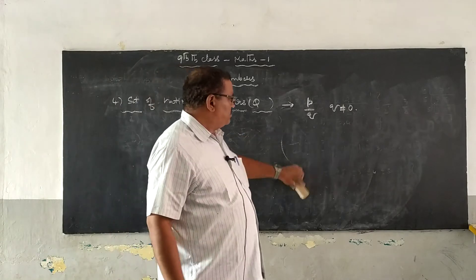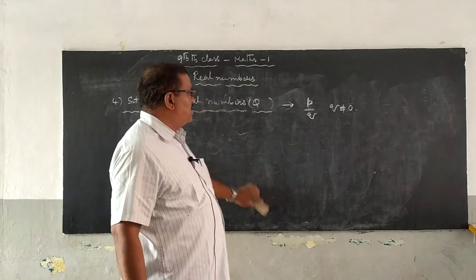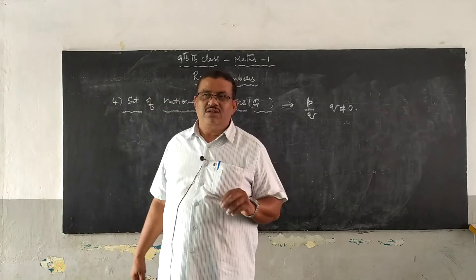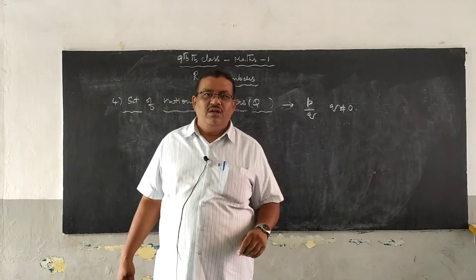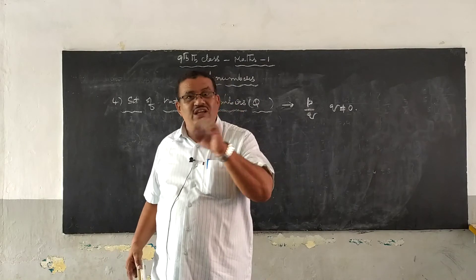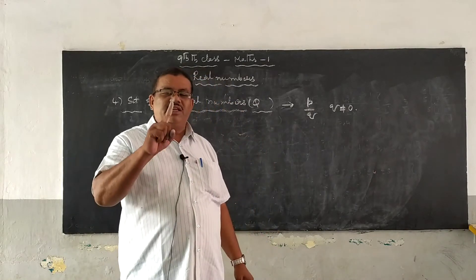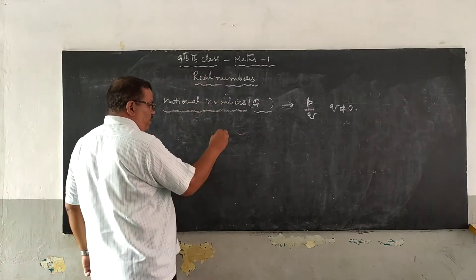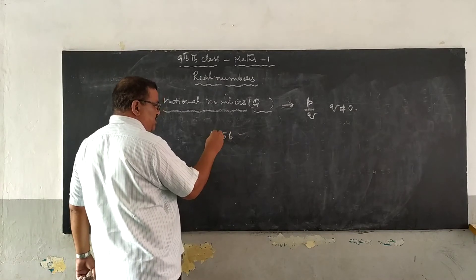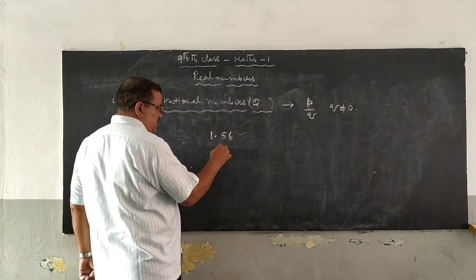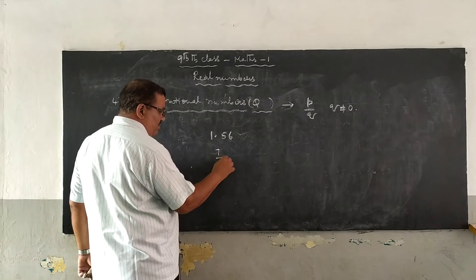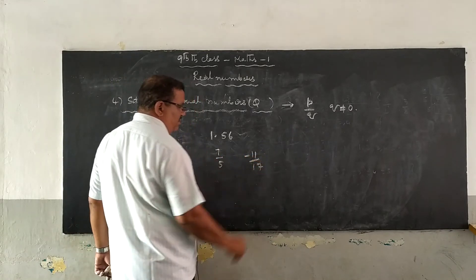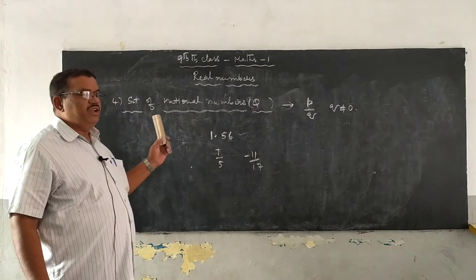So, rational numbers are represented in two forms. One is the p/q form, and the other is the decimal form. For example, 1.56 is the decimal form of a rational number. 7/5 is the rational (fractional) form of a rational number. Minus 11/17 is also a rational number. These are examples of rational numbers.